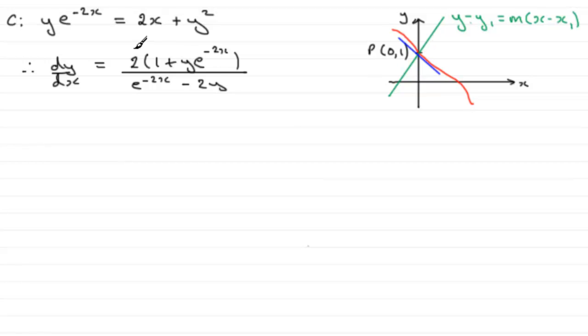And to help us with that, we already worked out what dy by dx was from the first part of the question. So all we need to do then is just substitute when x equals 0 and y equals 1, the coordinates of the point P, into here for dy by dx.